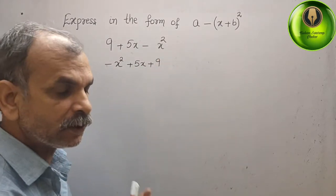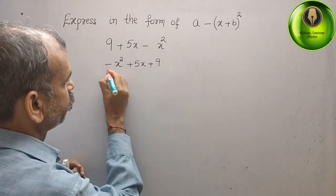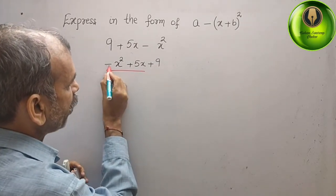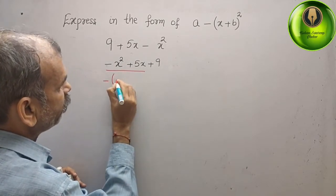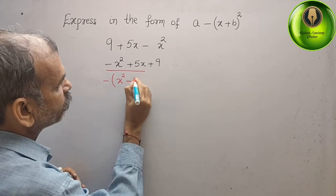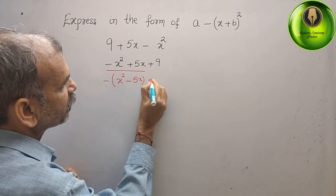Now see the first and second term. We will write minus as common. Minus as common, again it will become x square minus 5x plus 9.